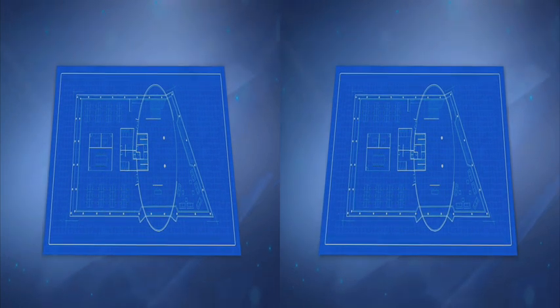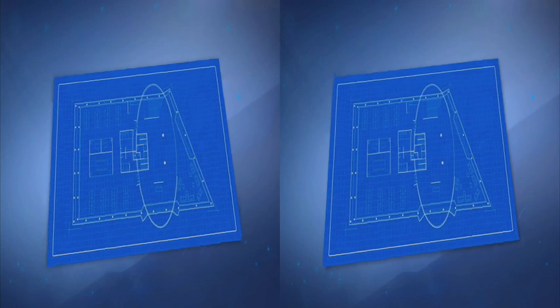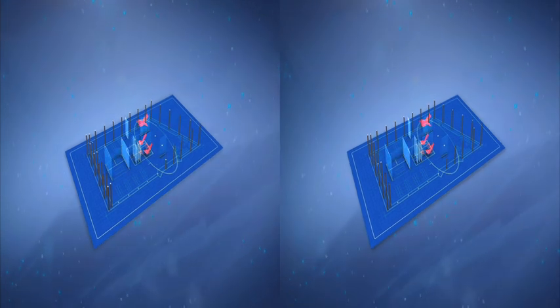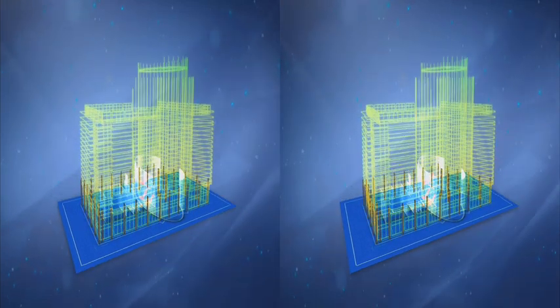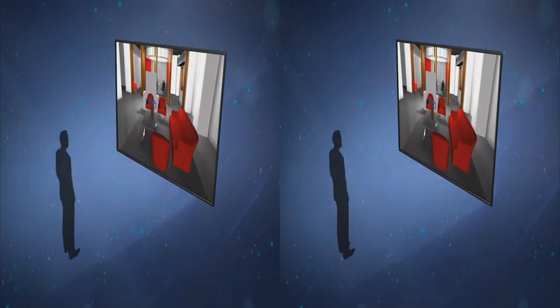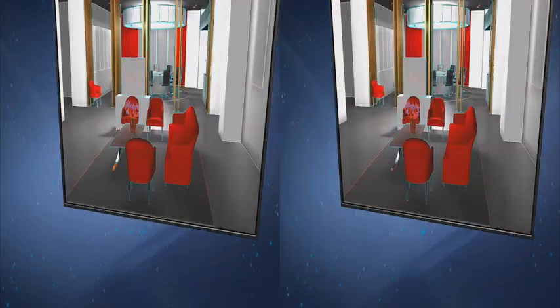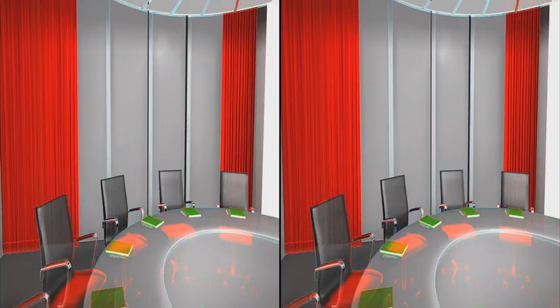2D drawings are still the construction industry's main form of documentation, but it's hard for designers to get all the information they need. Help can be found in the virtual world. Systems like Canon's high-resolution projection solution can help architects, engineers and owners avoid time-consuming and costly errors.